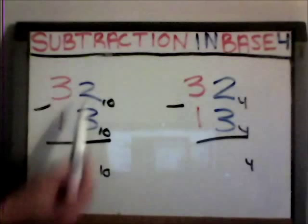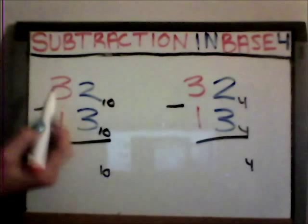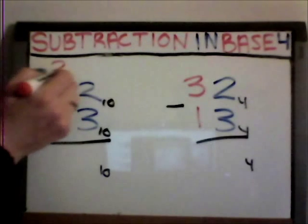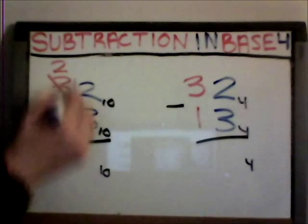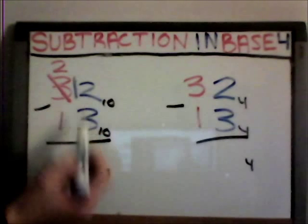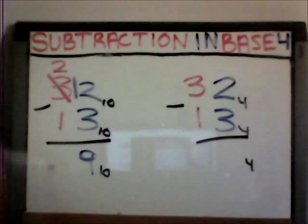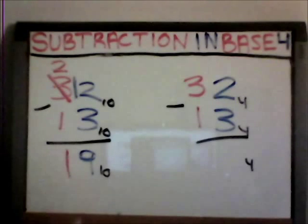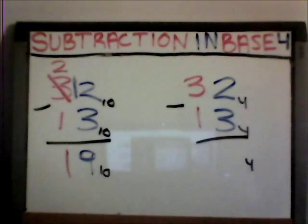Since this number is smaller than this number, you can't subtract it without getting a negative number. So you borrow from the next place value. The two becomes a twelve, so you minus three from twelve, and that equals nine. And you minus one from two, and that equals one. So your answer is nineteen base ten. Thirty-two base ten minus thirteen base ten is equal to nineteen base ten.